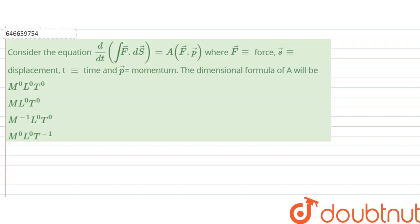Hello, we are given with a question and the question says, consider the equation d/dt of ∫F·ds equals A(F·P), where F is force, S is displacement, t is time and P is momentum. The dimensional formula for A will be what?